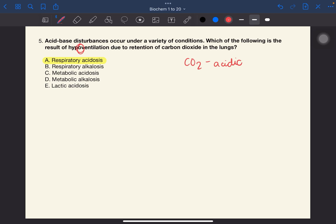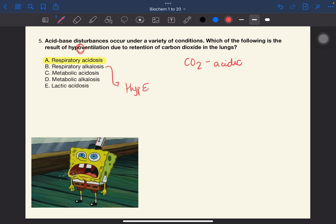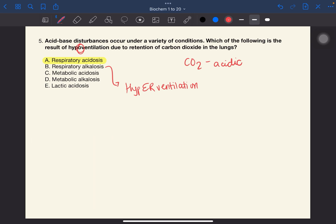For respiratory alkalosis naman, this is due to hyperventilation. So, opposite. Sa sobrang bilis yung breathing, too much carbon dioxide is expelled. May imbalance na sa pH levels sa lungs, which causes the respiratory alkalosis.